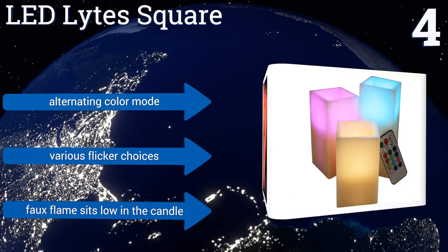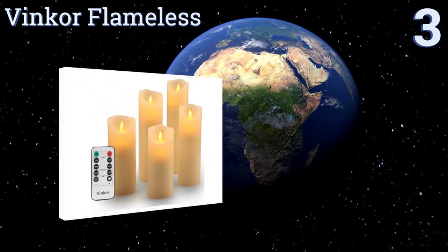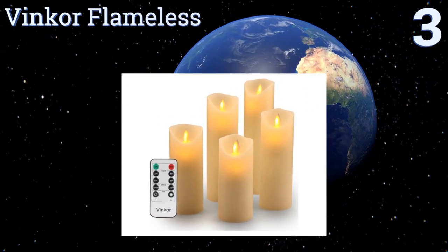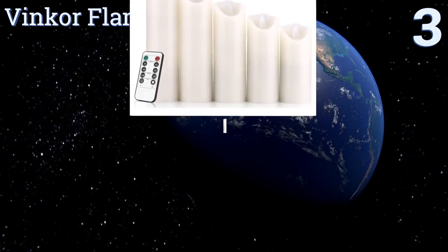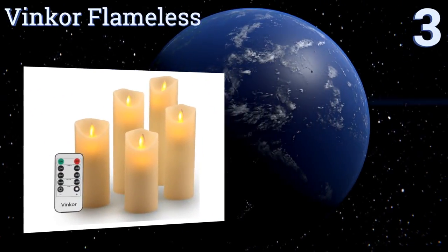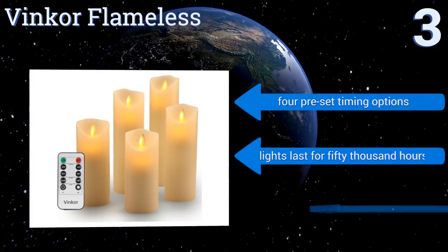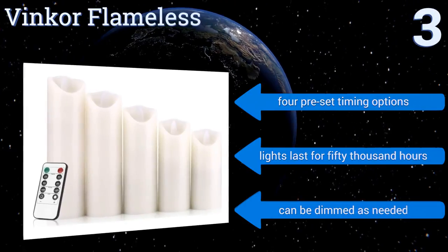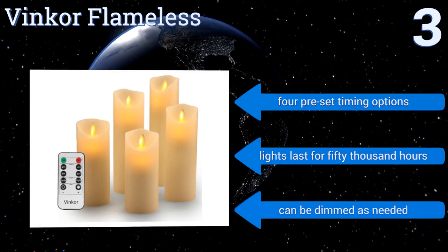Nearing the top of our list at number three, the slight dips in the fronts of the Vincor Flameless allow you and your guests to get a good look at the flickering LED bulbs, which appear to be moving like real fire. If you don't want people to know you use fake candles, these can trick them. They offer four preset timing options and can be dimmed as needed. The lights last for 50,000 hours.